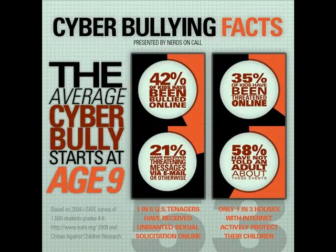Cyberbullying facts: the average cyberbully starts at the age of 9. 42% of kids admit to having been bullied online. 35% have been threatened. 21% have received threatening messages via email. 58% have not told an adult, and only one in three houses with internet actively protect their children.